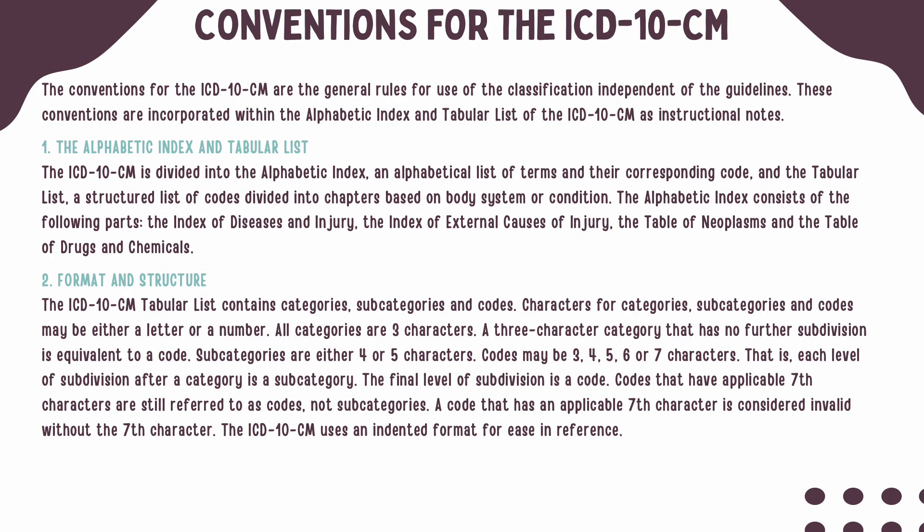Section 1 of the ICD-10-CM Guidelines covers the conventions for ICD-10-CM. The ICD-10-CM consists of the Alphabetic Index and the Tabular List. The Alphabetic Index is a list of terms and their codes, while the Tabular List is divided into chapters based on the body system or condition. The Alphabetic Index is made up of the Index of Diseases and Injuries,